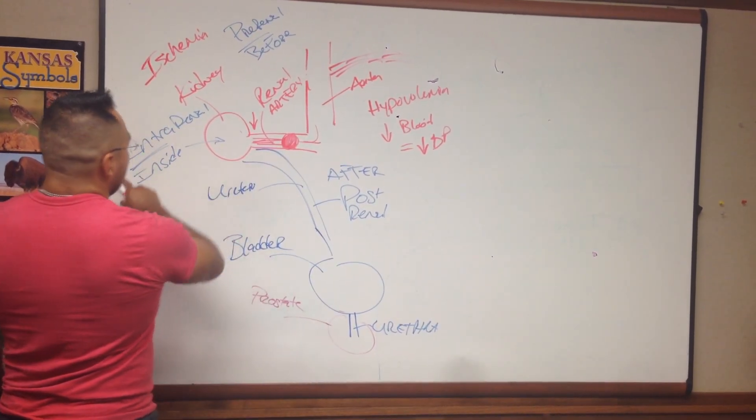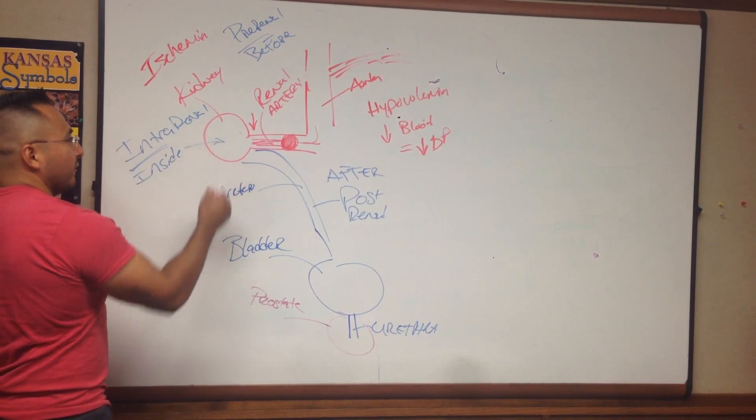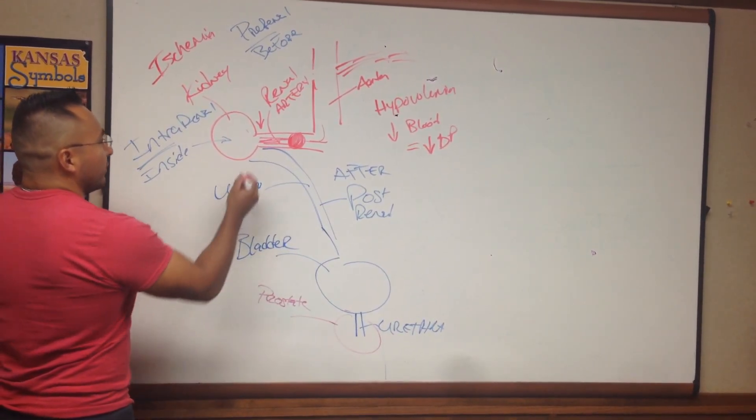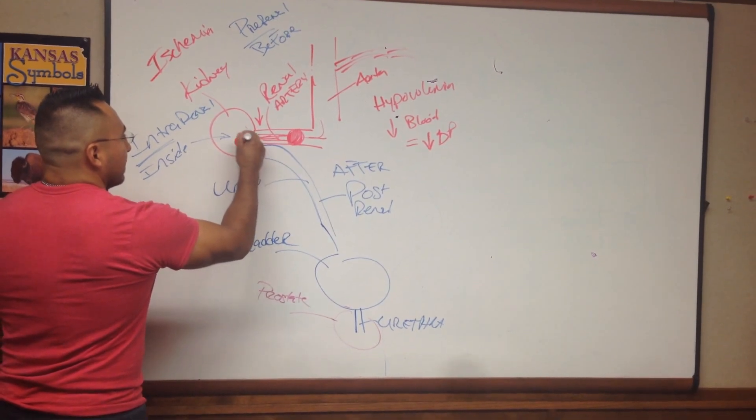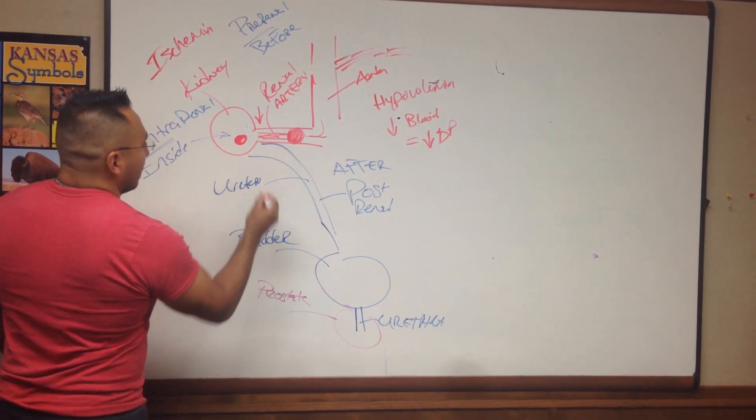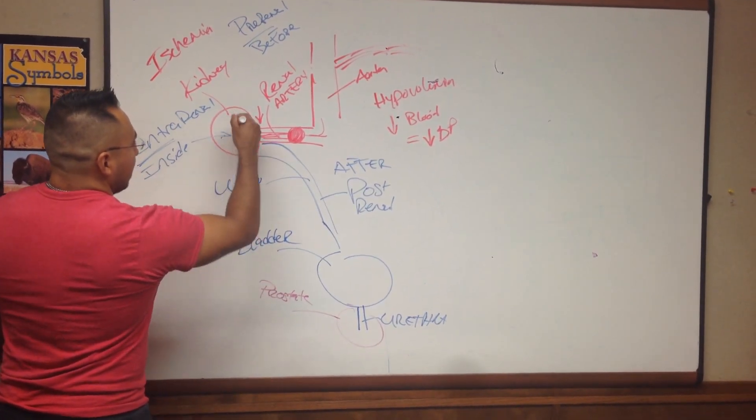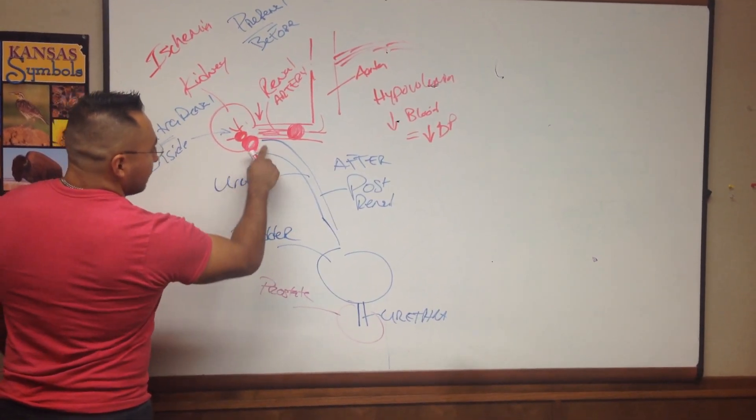Intra-renal, again, meaning inside the kidney. The kidney is affected. Something that could happen or that may cause intra-renal failure would be something like a kidney stone, a huge kidney stone. More importantly, kidney stone in the renal pelvis so that urine is no longer coming into the ureter.